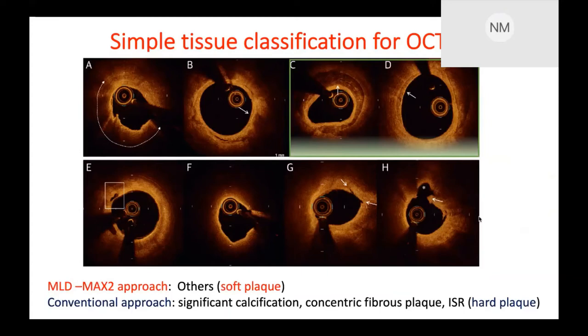This algorithm requires tissue classification and exact tissue evaluation for OCT-guided PCI. Our OCT-derived tissue characteristics are fairly complex — I think these characteristics are almost for research purposes. So I'd like to propose just two tissue classifications: the first is soft plaque, and the second is hard plaque for PCI.